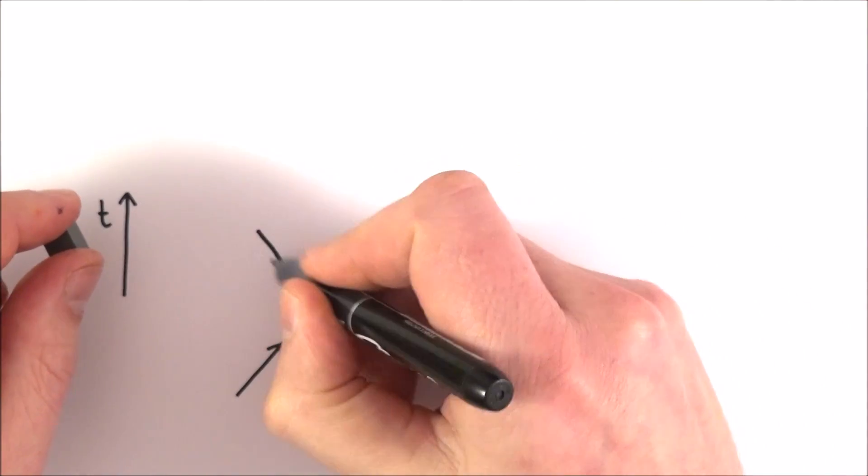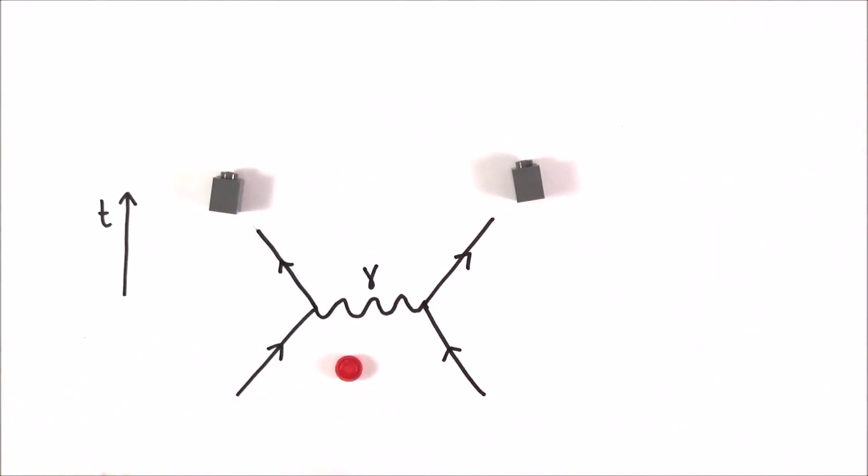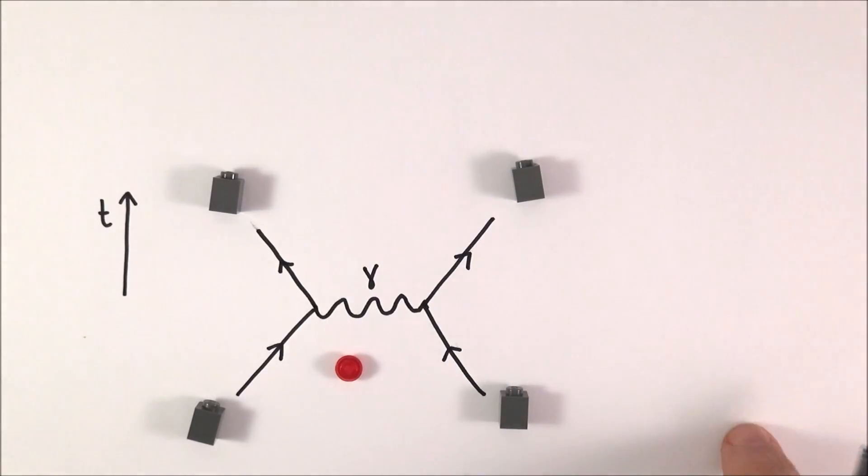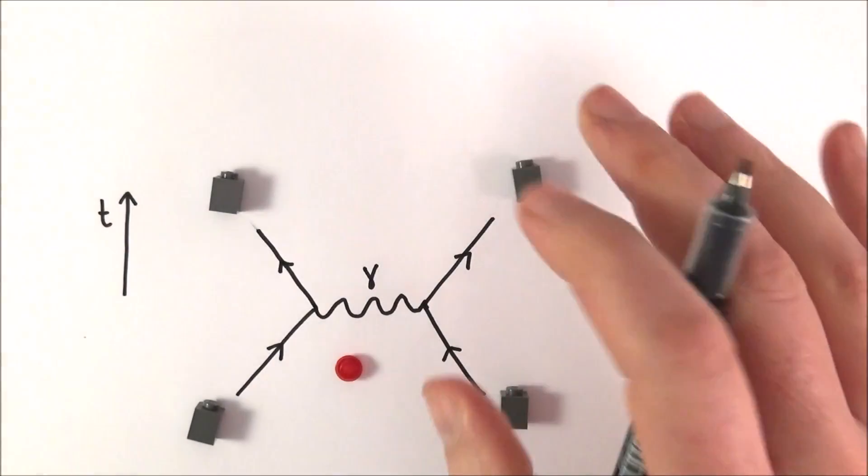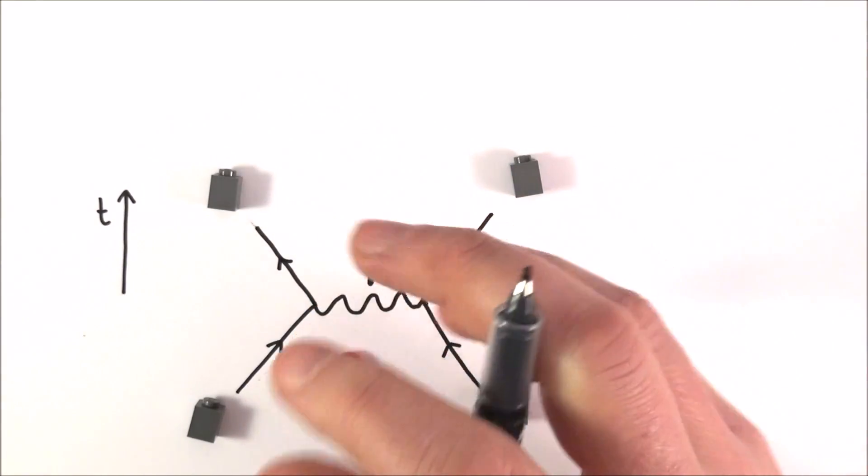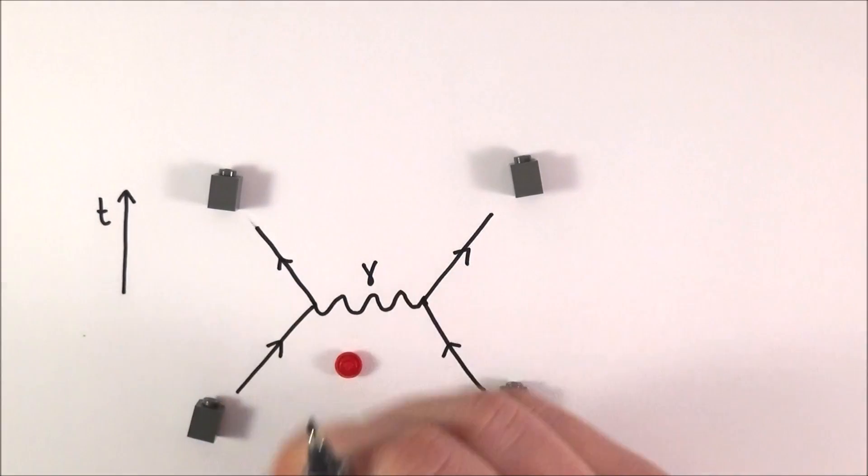And what we have now is a diagram to actually show this interaction of a couple of electrons. This diagram here is probably in the corner of the video, as well as the logo for my channel. This is what we call a Feynman diagram, and it's a nice, straightforward, simple way to actually look at particle interactions.